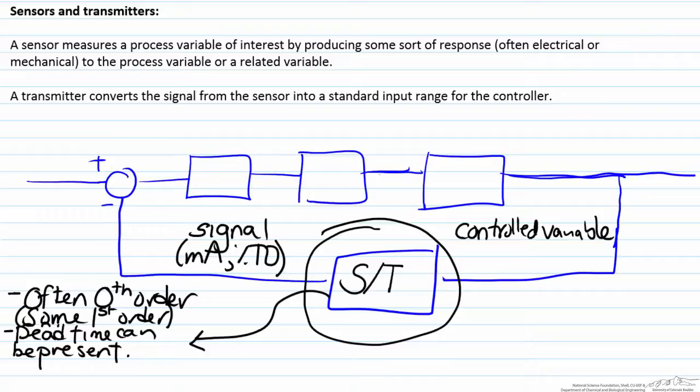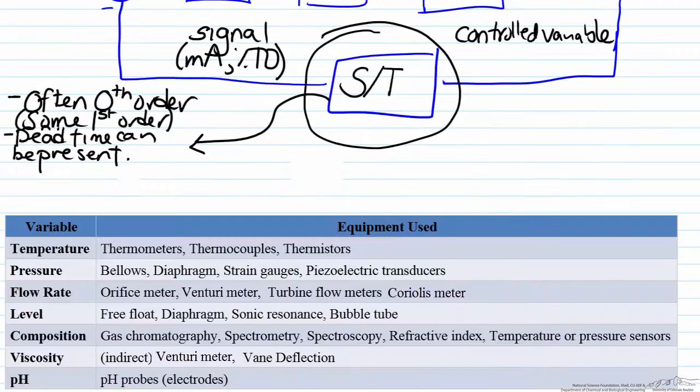Another example of a situation with dead time, aka transportation lag or time lag, would be a system where you are measuring your value offline. For example, many composition sensors such as GCs and the like are not built into the system, so therefore there would be some dead time necessary in order to carry out that experimentation.